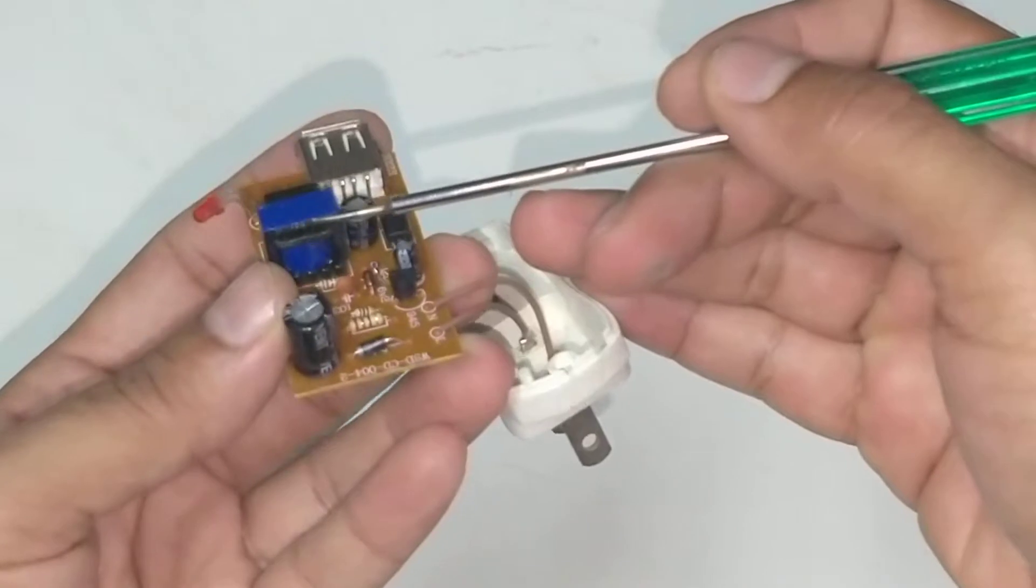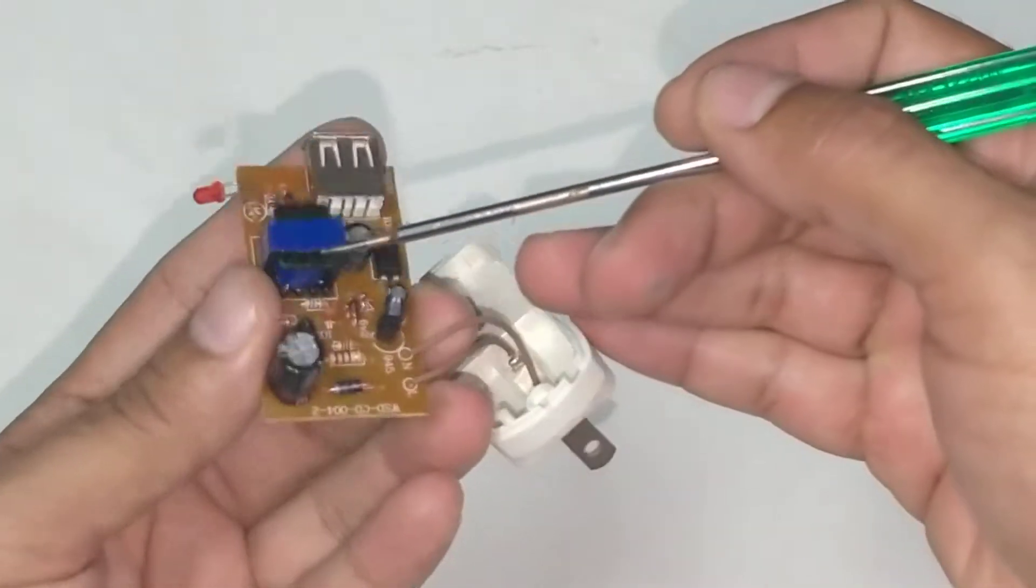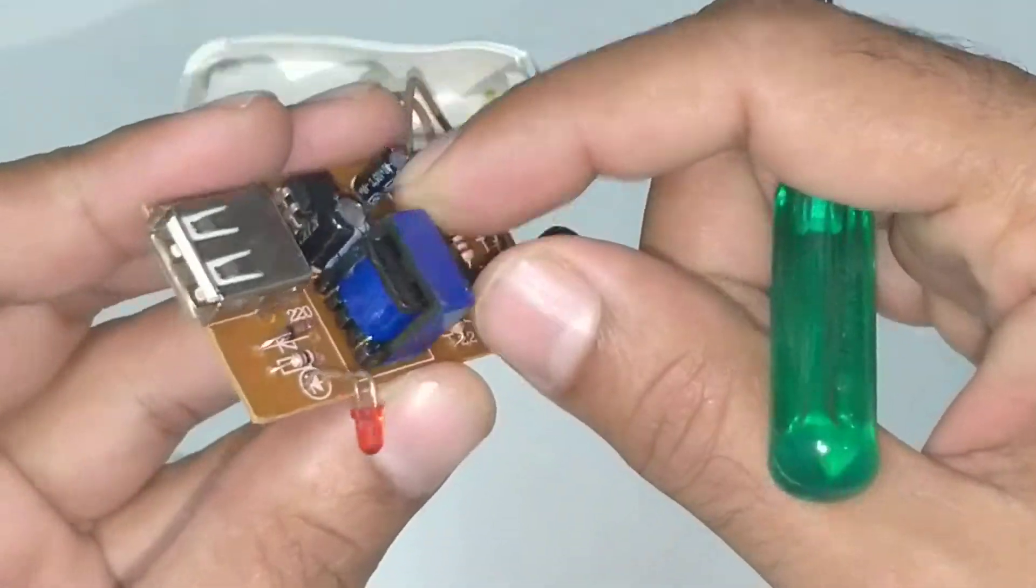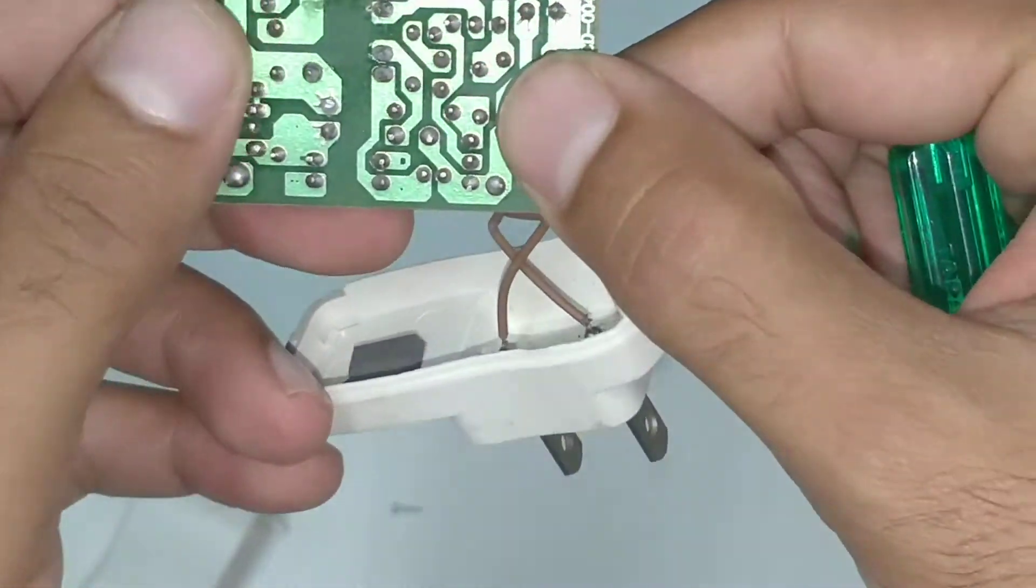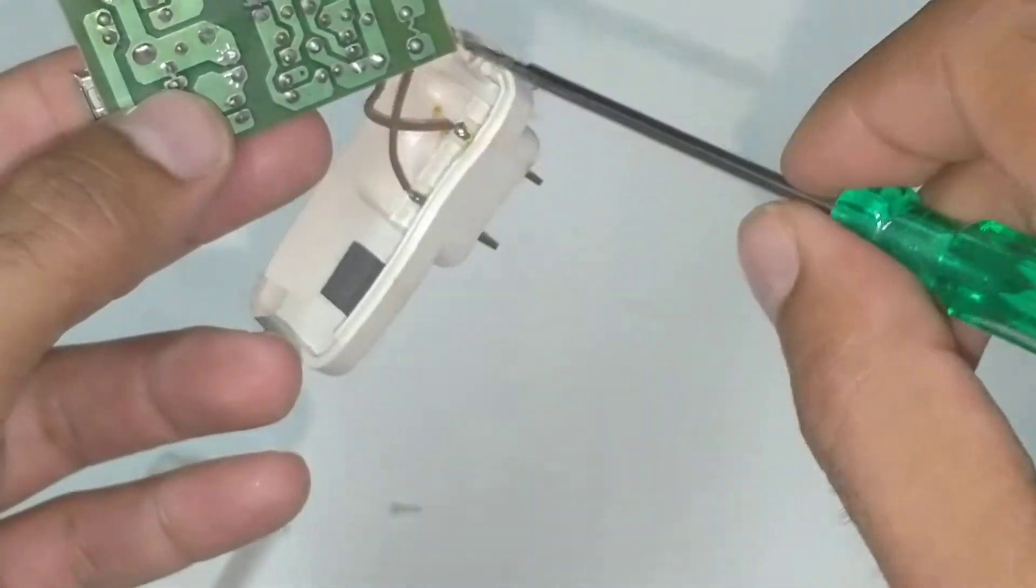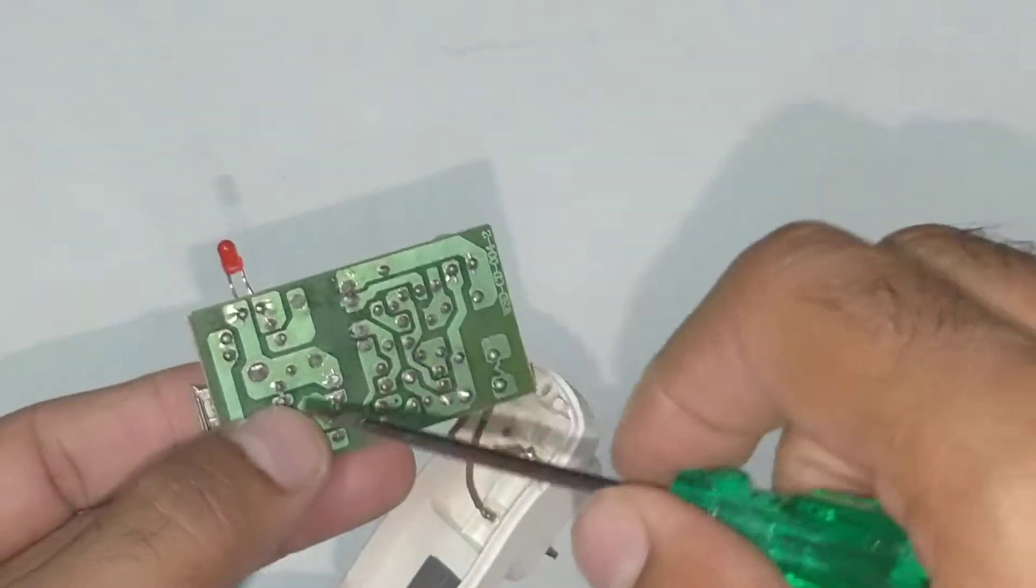This is also a transformer, called a ferrite transformer. This is so compact. And this also has primary and secondary. For example, this part of the circuit is the primary switching circuit and this part is the secondary rectification circuit.